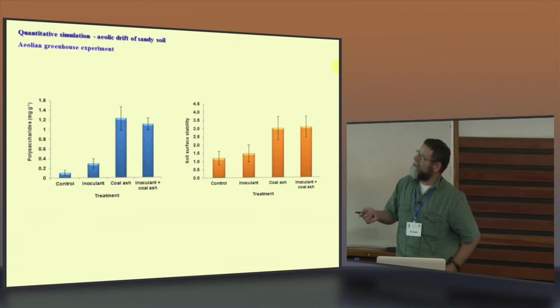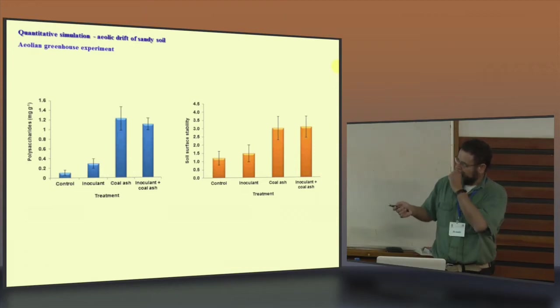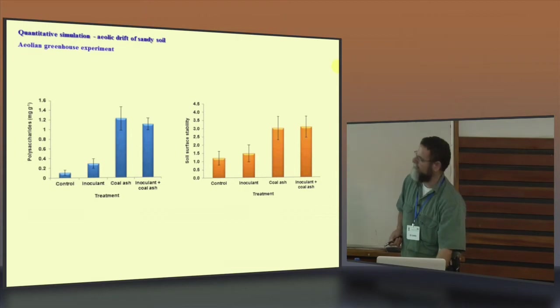When we're looking at the level of the polysaccharide, all the three of them are much higher and significant than the control. But the one with the coal ash and the inoculant with the coal ash are much higher. When we looked at the soil surface stability, again, we got almost the same results. Although over here, it's not statistically significant, it's better.